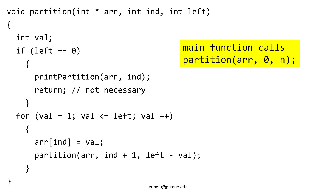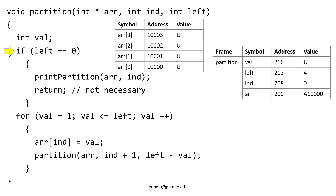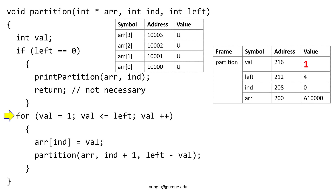Please remember that the main function calls this partition function with the heap memory, zero, and the number to be partitioned as the three arguments. Let's understand how this function works by tracing the changes in the stack and heap memory. When the partition function is called the first time, all values in the heap memory are uninitialized and thus marked u. The first argument is the address of the heap memory. The second argument is zero. The third argument is the value to be partitioned, and it is 4.